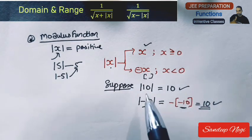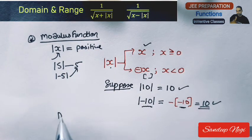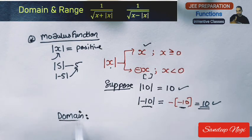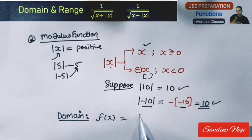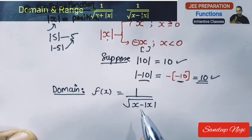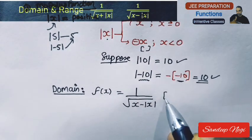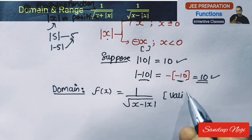Now you can see the problem written here. You have to find the domain. The function given to you is f(x) = 1 upon under root of (x minus mod x).